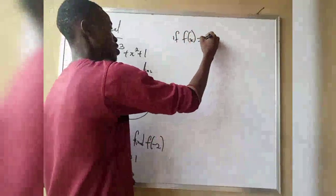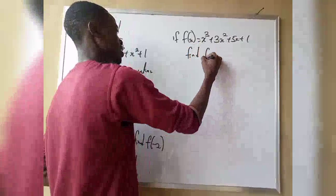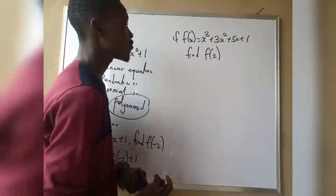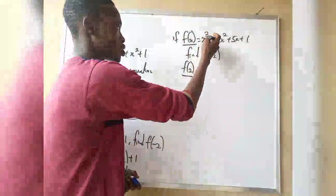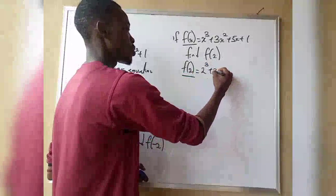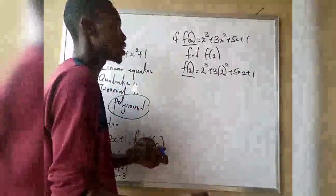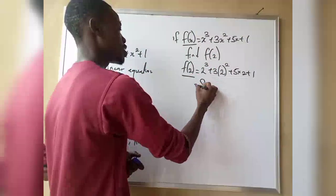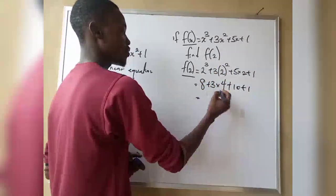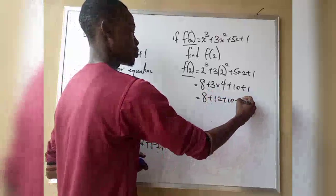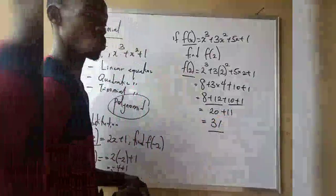Let us look at another question. We have f(x) equals x cubed plus 3x squared plus 5x plus 1. They are asking us to find the value of f(2). Comparing f(x) and f(2), x equals 2. Substituting: 2 raised to power 3 plus 3 times 2 squared plus 5 times 2 plus 1. That gives us 8 plus 12 plus 10 plus 1, which equals 31.